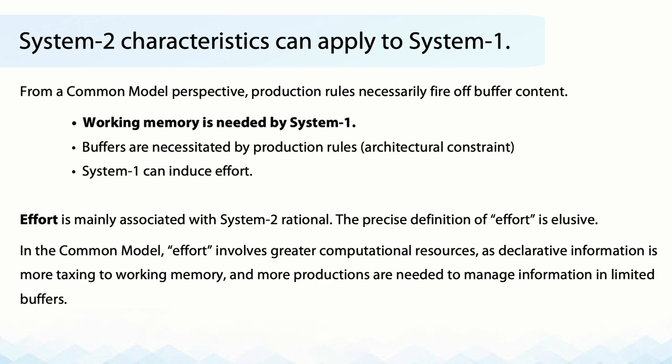Conversely, System 2 characteristics can also apply to System 1. From a Common Model perspective, production rules necessarily fire off buffer content. What that means is that buffers — working memory — are needed in System 1, which is contrary to what is conventionally thought. Buffers are necessitated by production rules; working memory is needed by procedural knowledge. This is an architectural constraint of the Common Model.